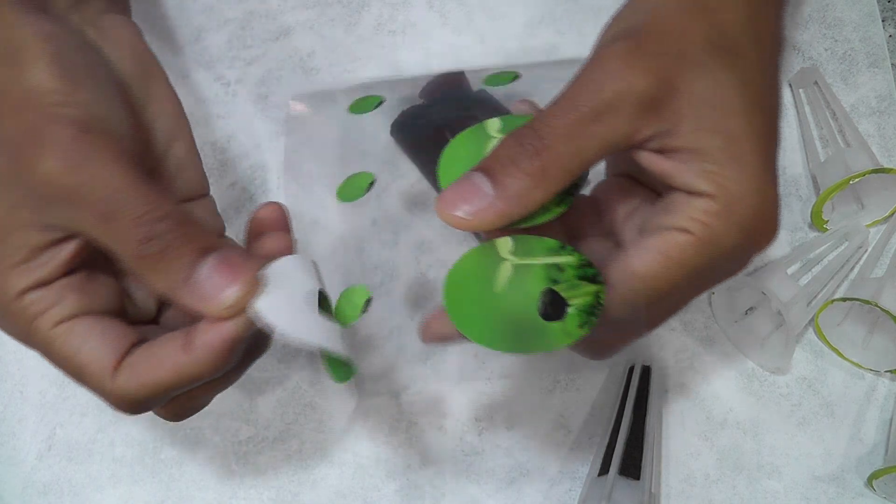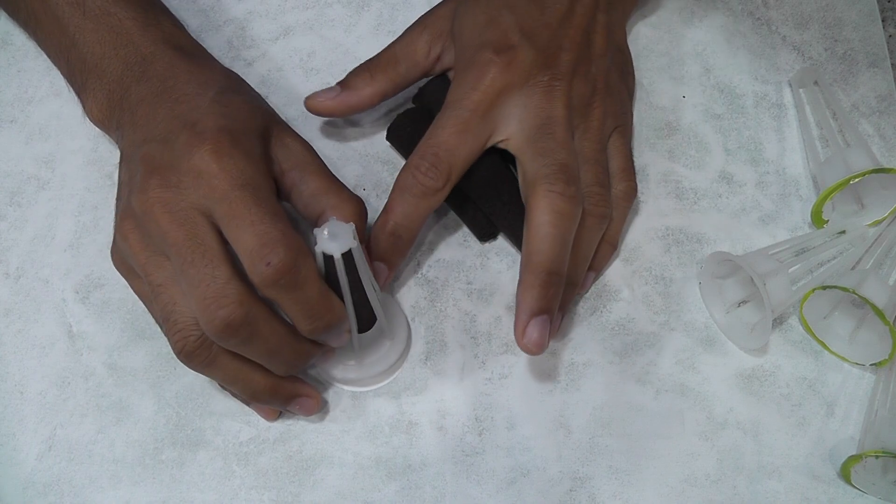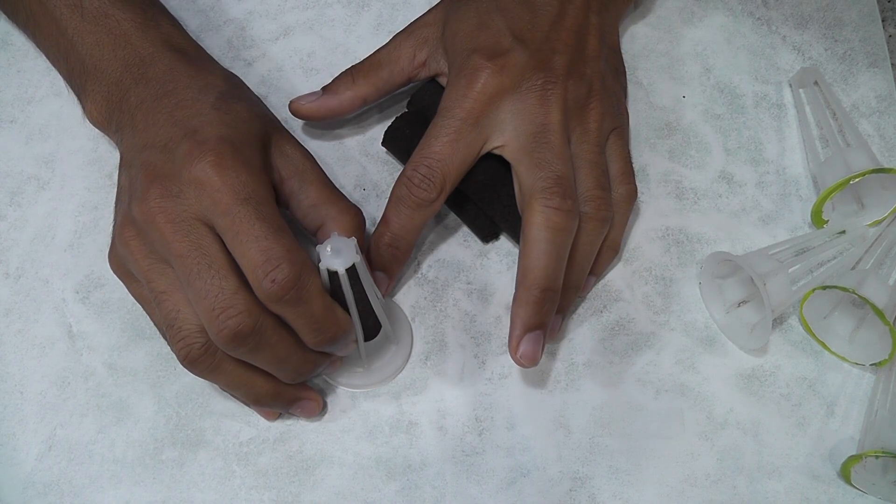Then take a sticker and place it on a flat surface. Then align the pod basket on the sticker and press it hard.